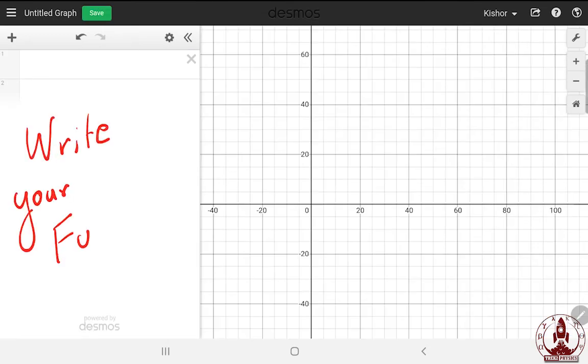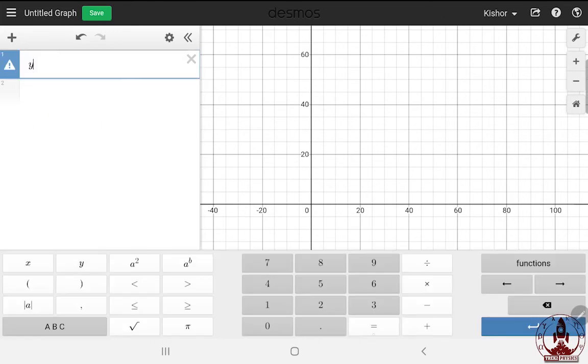On the left hand side, I will input my function in terms of X and Y. And then voila, this is our Y equals X squared function.